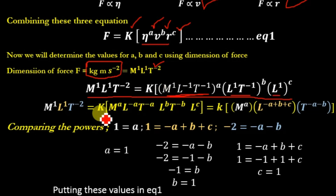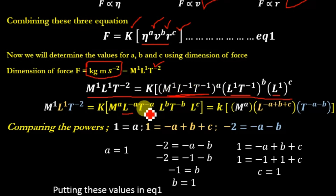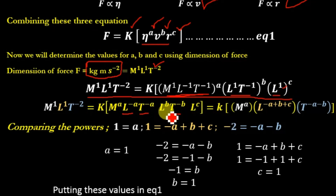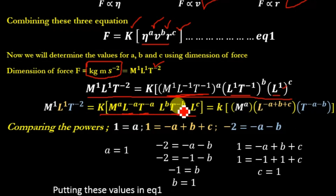Expanding the powers: viscosity gives M^A · L^(−A) · T^(−A); velocity gives L^B · T^(−B); and radius gives L^C. Rearranging and grouping by dimension: M^A, then for length L^(−A + B + C), and for time T^(−A − B).